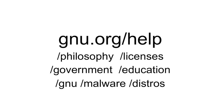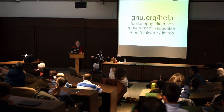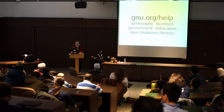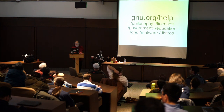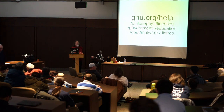There are many other kinds of work we need — look at gnu.org/help and you'll find something you can do. At gnu.org: in /philosophy you'll find all the articles about philosophical and political questions related to free software; in /licenses, everything about which licenses are free and how to use them; in /government, proposed policies for moving government to free software; in /education, information about schools including examples of schools that have migrated; in /gnu, the history of the GNU system; in /malware, hundreds of examples of malicious functionalities in proprietary software; and in /distros, information about which GNU/Linux distros are free.